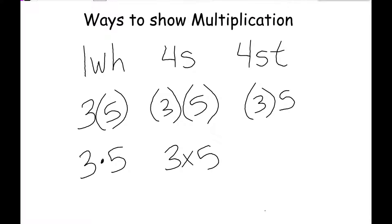There are different ways to show multiplication. If you have three letters next to each other, that means we want to multiply those three letters. We always put in numbers for those letters, but like this one is length times width times height. A number next to a letter also means multiply, or even a number next to two letters.